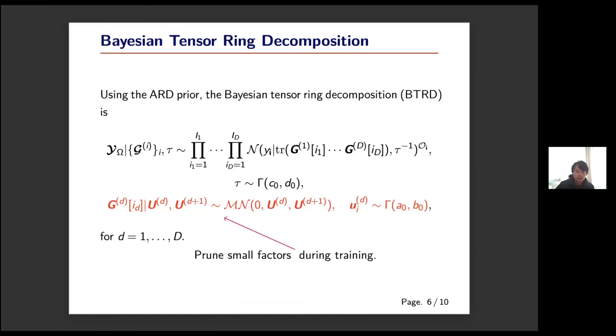During the training process, the irrelevant matrix factors tend to be very small values and we can prune these small factors to automatically infer the tensor ring ranks.